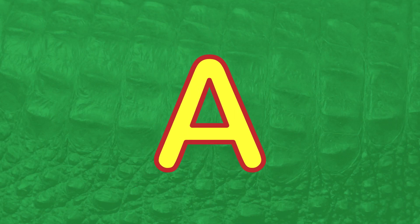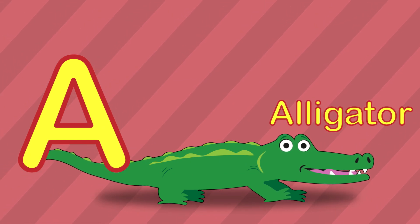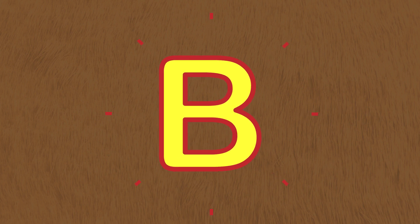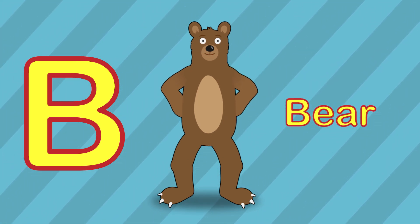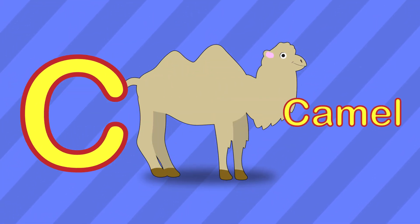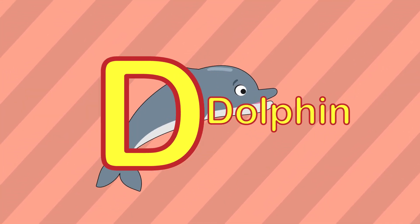A is for alligator. B is for bear. C is for camel. D is for dolphin.